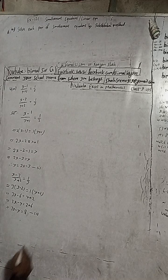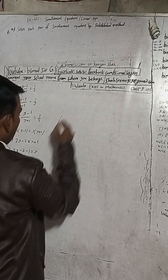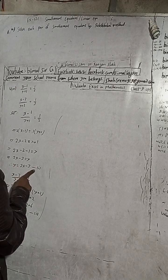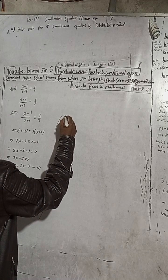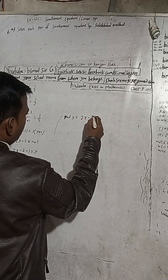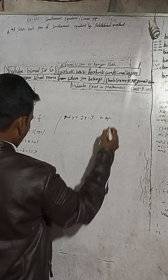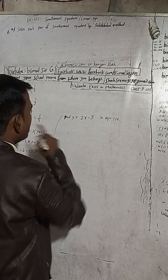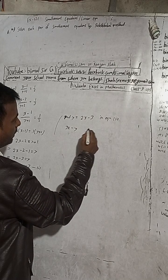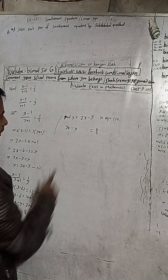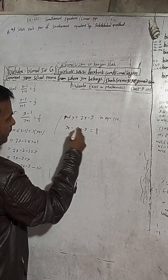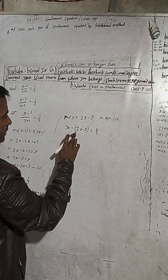Now substitute the value of y from equation 1 into equation 2. That means put y equal to 2x minus 3 in equation 2. Equation 2 is 3x minus y equals 8. In place of y, we put the value 2x minus 3 — make sure to put this bracket, it is very important.